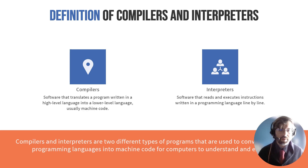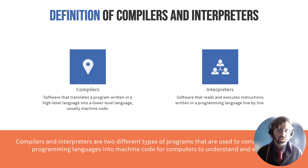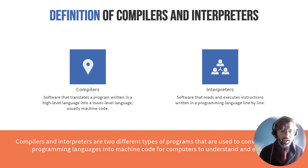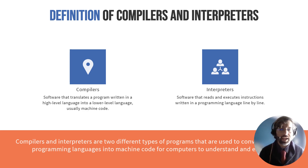Now, a compiler takes a language like C++ or C# and it translates it all at once into that lower-level language, and creates what's called an executable — a little program called an executable.